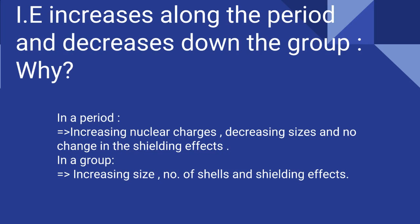On the contrary, in a group, there is an increasing size of the atom because the number of shells are increasing as we move down the group. The shielding effect is also increasing. So the removal of an electron becomes easier as we move down the group, and the ionization energy decreases from top to bottom.